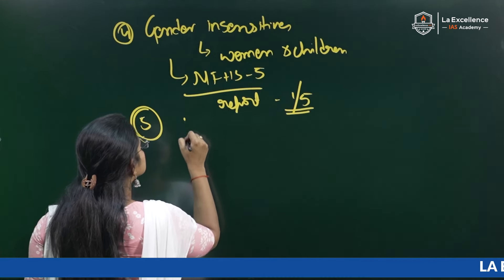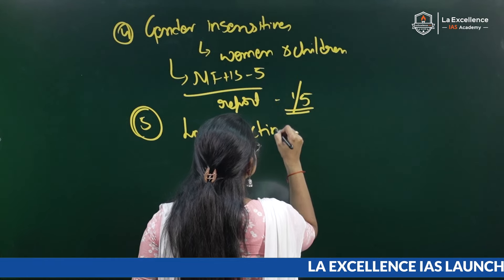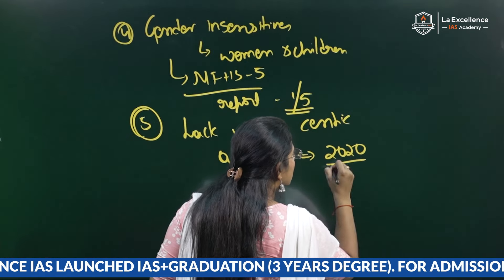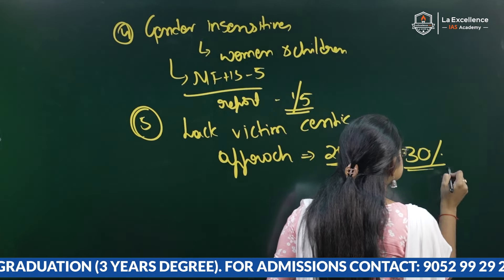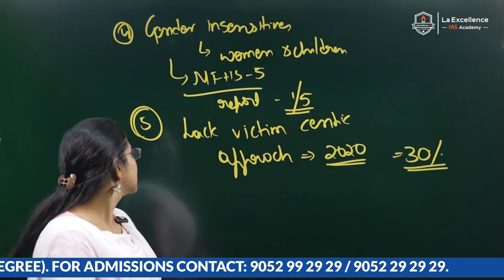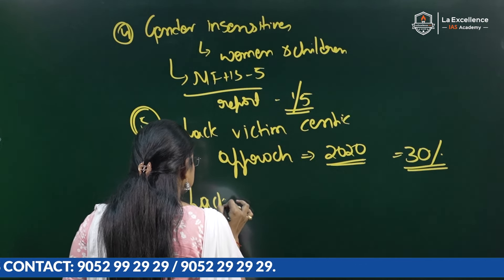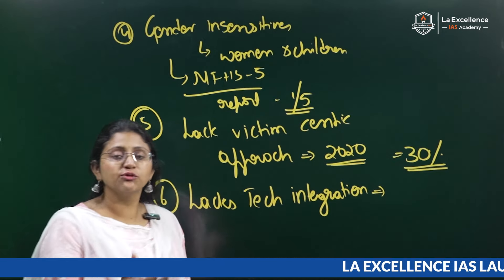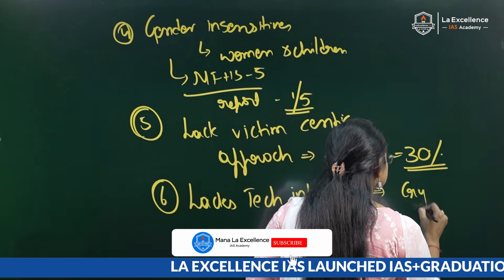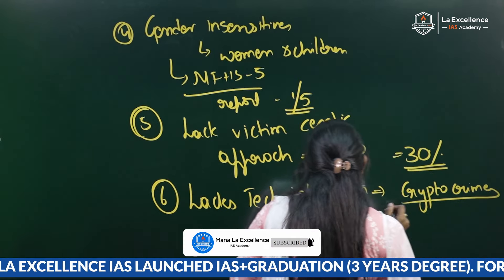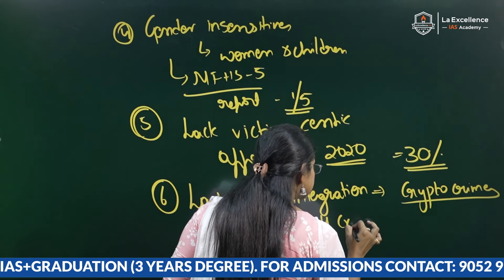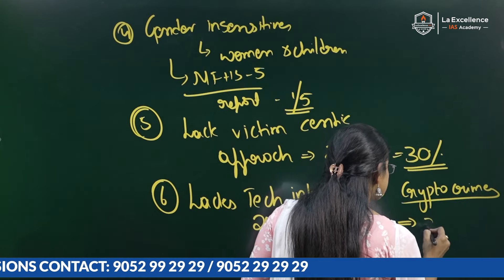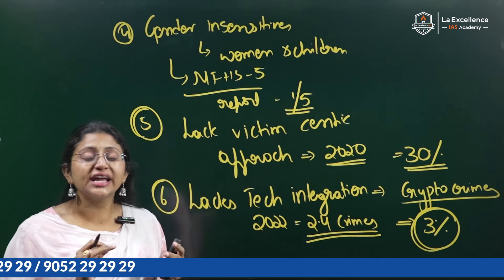The fifth reason is that these laws lack a victim-centric approach. A 2020 report states that only 30% of eligible victims received compensation, meaning most victims did not even receive compensation. The sixth reason is that it lacks technological integration. Crimes are evolving — for example, crypto crimes. Globally in 2022 alone, 2.4 million crimes happened in relation to crypto, but the conviction rate is just three percent, which shows we are not equipped to deal with current crimes.